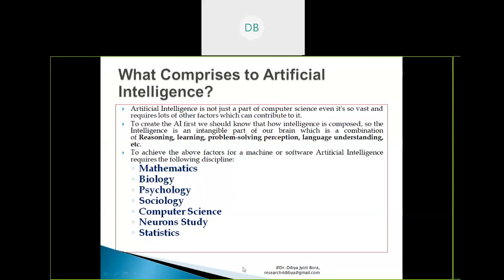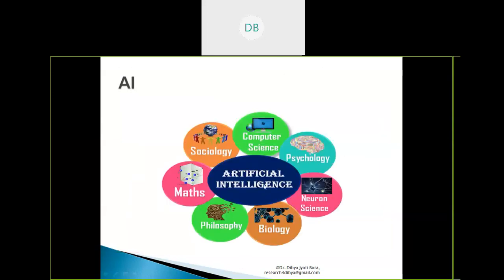Look at this figure. This is artificial intelligence, and this circle is touching all the others: computer science, psychology, neuroscience, biology, philosophy, and math. From the contributions of all these disciplines, we build our AI-based system. We need contributions from these different disciplines. You can say AI is a part of computer science, but you cannot say AI is only a part of computer science.